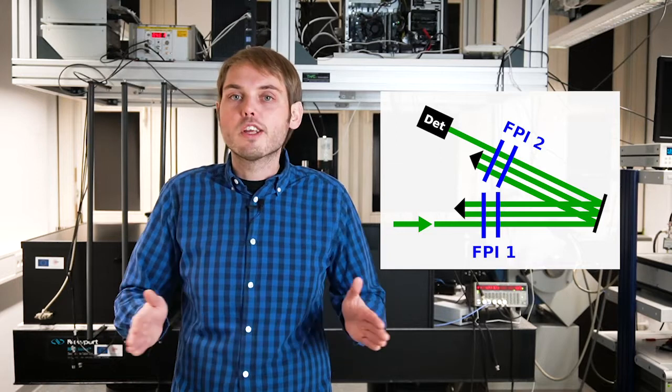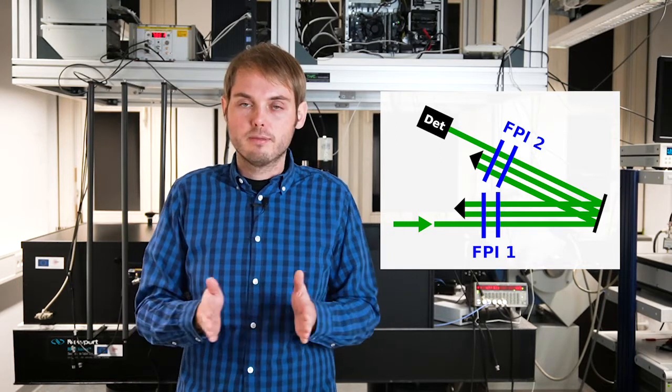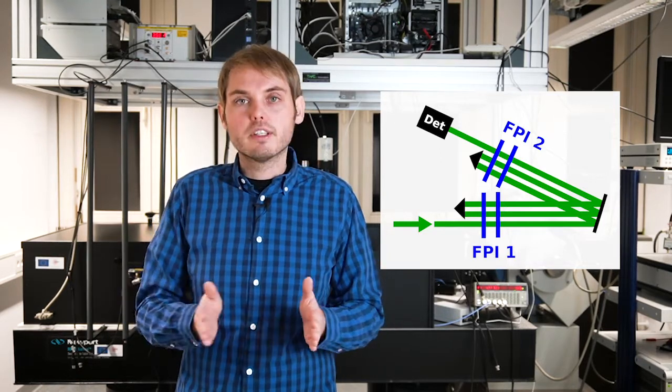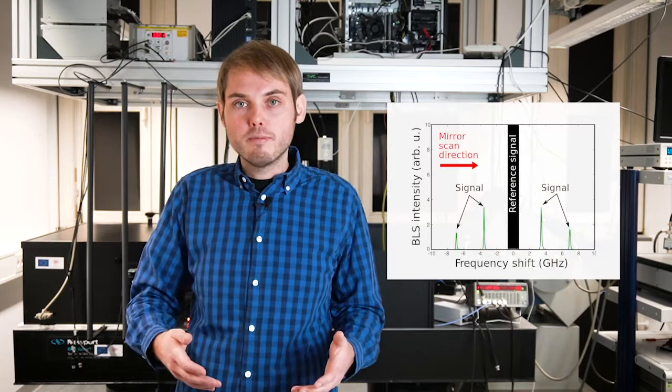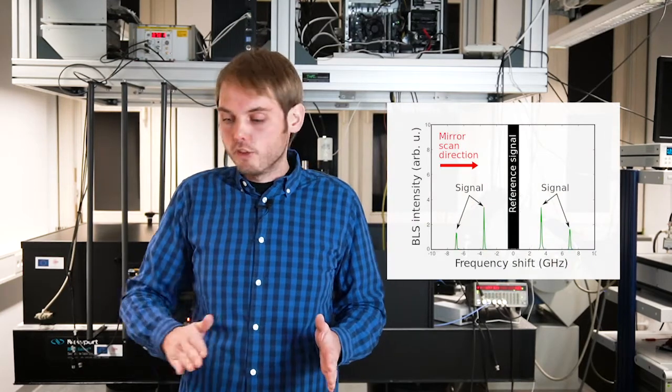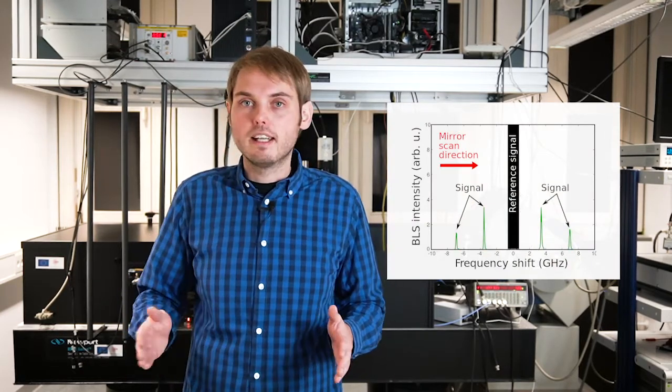And it is not only the low scattering cross-section, but also the working principle of the interferometer itself causing these rather long acquisition times. As I mentioned before, inside there are two pairs of Fabry-Perot interferometers which are being scanned all the time, which is required for the stabilization process. So the distance of the mirrors is varied all the time. And only at a certain distance, your actual signal is being transmitted. And the rest of the scanning motion is basically dead time.